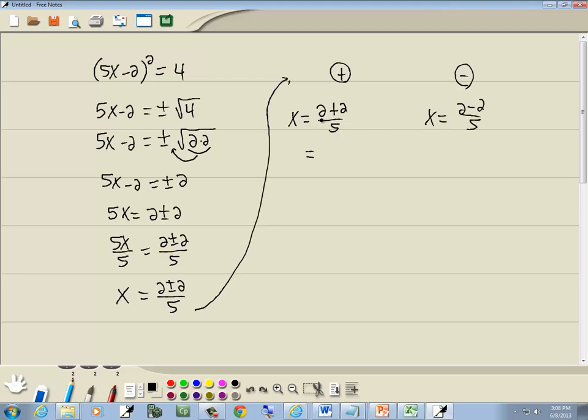The reason why we split apart in this case is because we can combine together the top parts. 2 plus 2 is 4, so we end up with 4 fifths. Now on this one, 2 minus 2 is 0. 0 divided by anything is 0. And those would be our two answers.